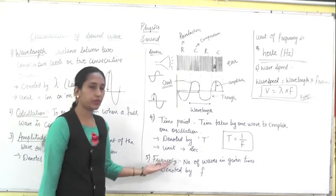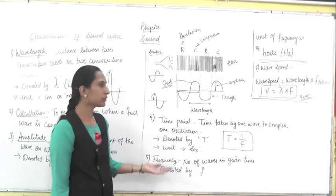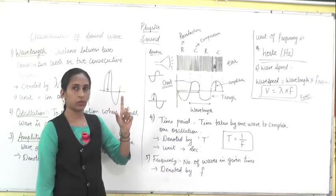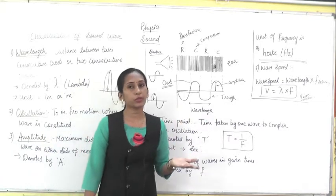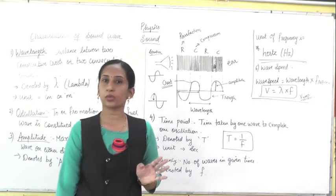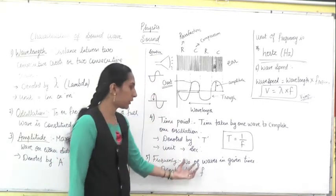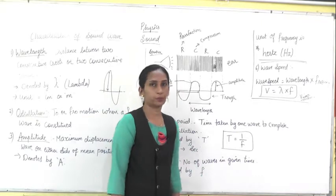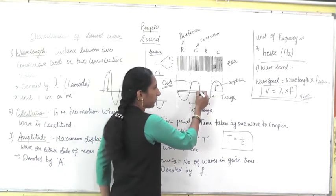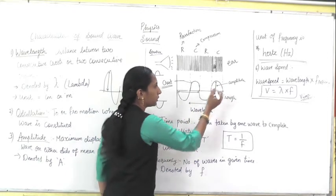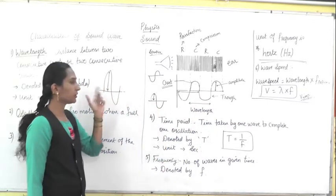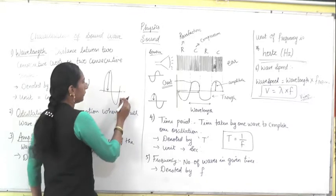The fifth characteristic is frequency. Frequency means the number of waves. If four waves are there, the frequency is four — just count the number of waves in a given time. What is the frequency of this graph? Count it: from here to here is one wave, from here to here is two — so the frequency of this wave is two. If only one wave is there, frequency is one.